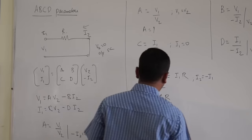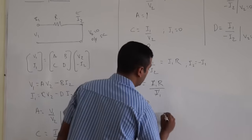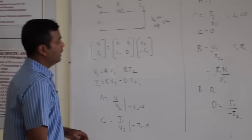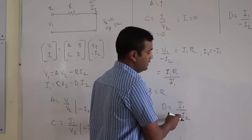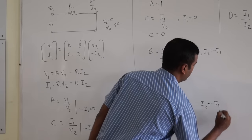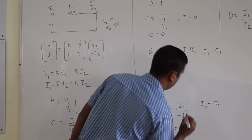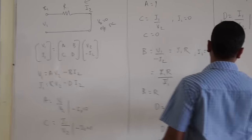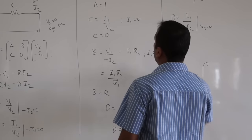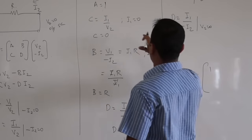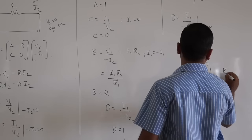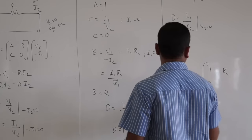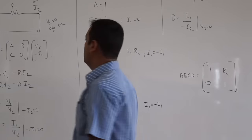For D equals I1 by minus I2 when V2 equals 0: since I2 equals minus I1, D will be nothing but equal to 1. So we have calculated the ABCD parameters of the series element: A equals 1, B equals R, C equals 0, and D equals 1. It is important that we make a note of it because we will be using this in future.